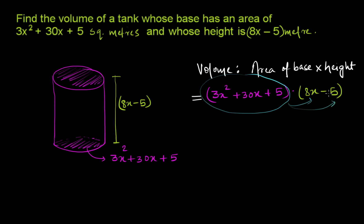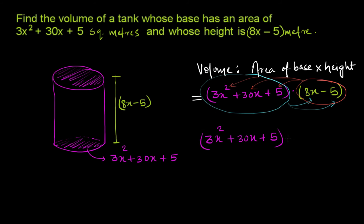We take 8x minus 5 and multiply it by every term: first from 3x squared, then 30x, then plus 5. We can do it either way and the answer will be the same. So we have 3x squared plus 30x plus 5, multiplied by 8x, and then plus 3x squared plus 30x plus 5, multiplied by negative 5. This is our multiplication using the distributive property.